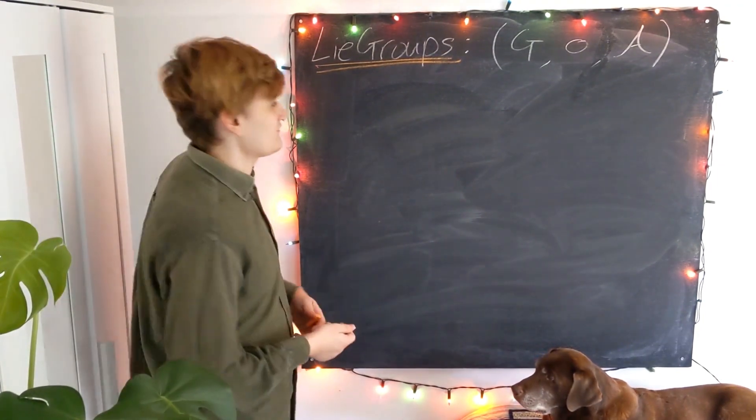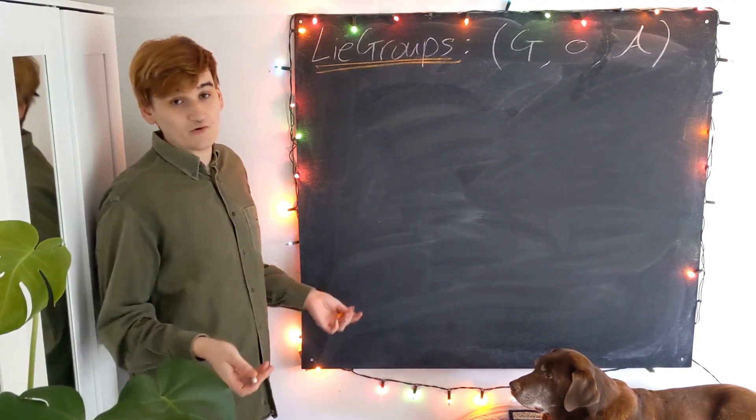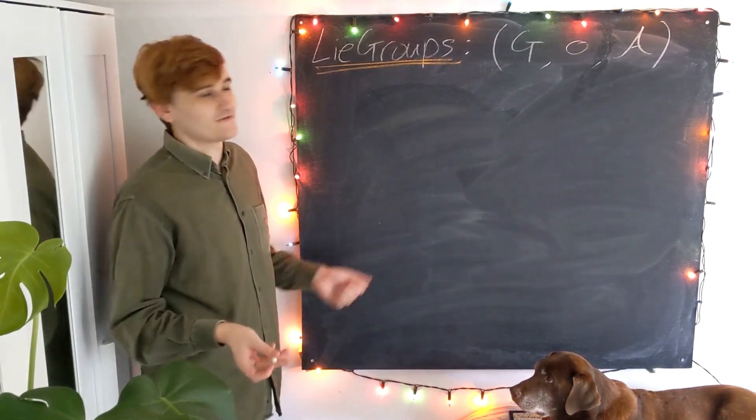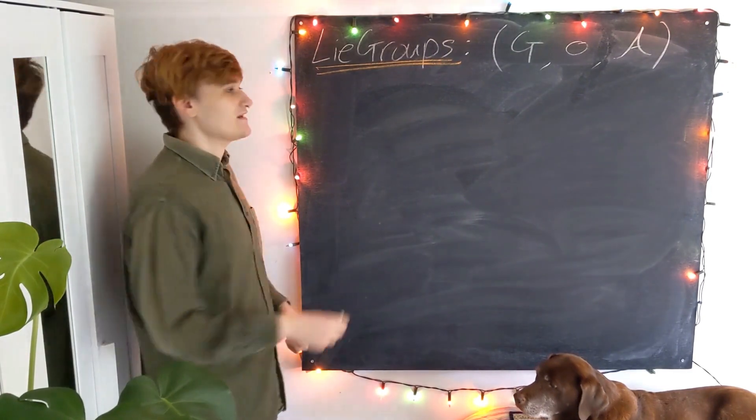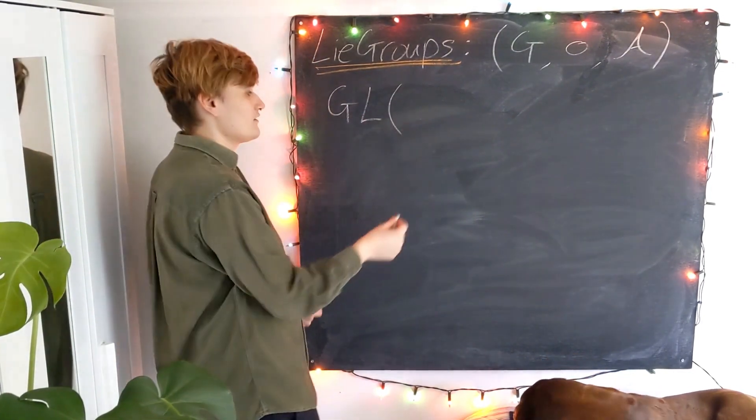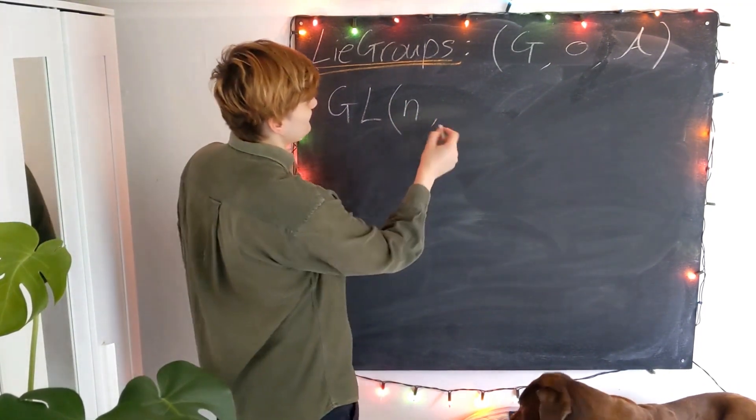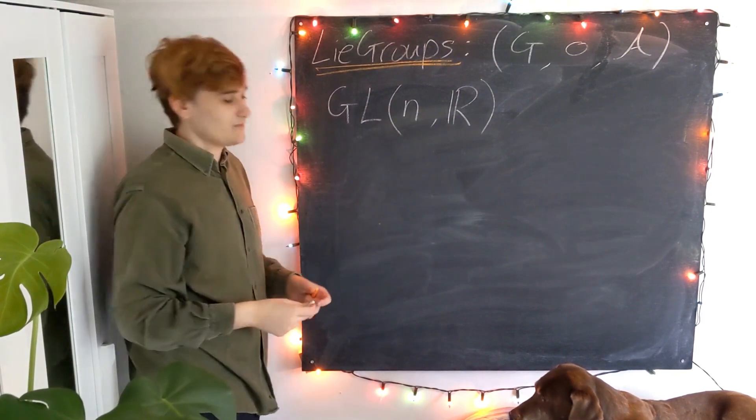OK, so I'm just going to dive in and give you an example straight away. It's probably the most important, or really, you can kind of view it as being the mother of all Lie groups, which is the general linear group, GL(n,R). I'll tell you what this means in a second.